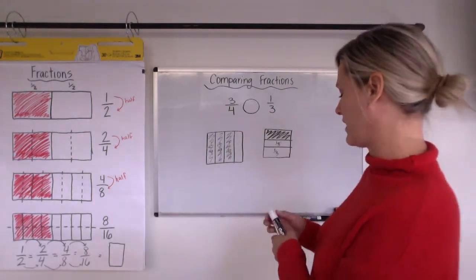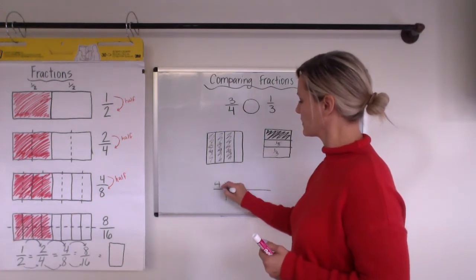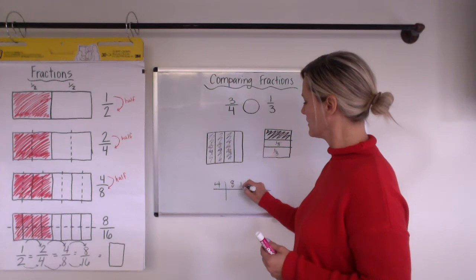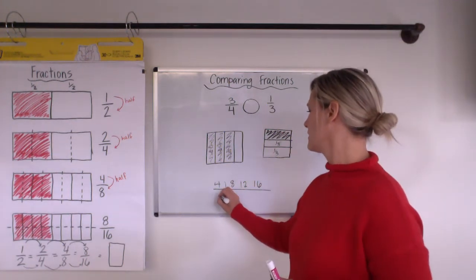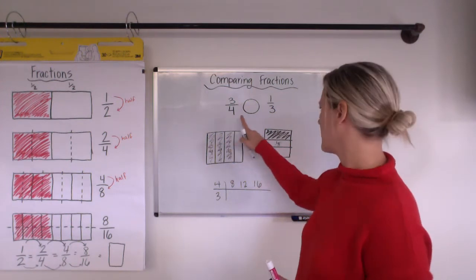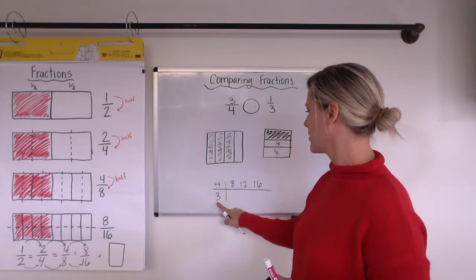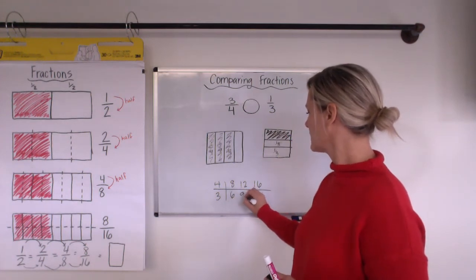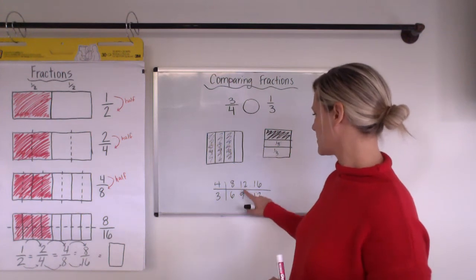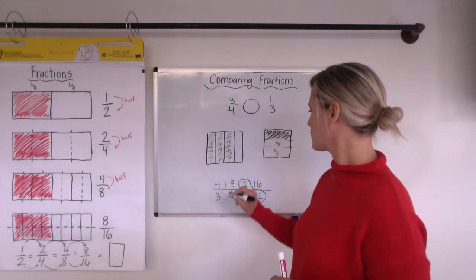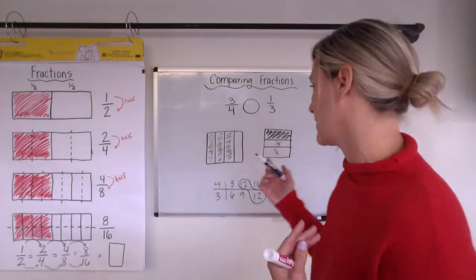Now you can probably see that this one has more shading, but I want to use a common denominator to compare. I actually want to get the exact same number of pieces. So I'm going to think about what I could do to each of these pictures to make it have the same number of pieces. I'm going to count by fours - four, eight, twelve, sixteen - and I'm going to count by threes because I have a three for the denominator here - three, six, nine, twelve. I see that there's a twelve on both lists, so I can break it into twelve pieces for each of them.